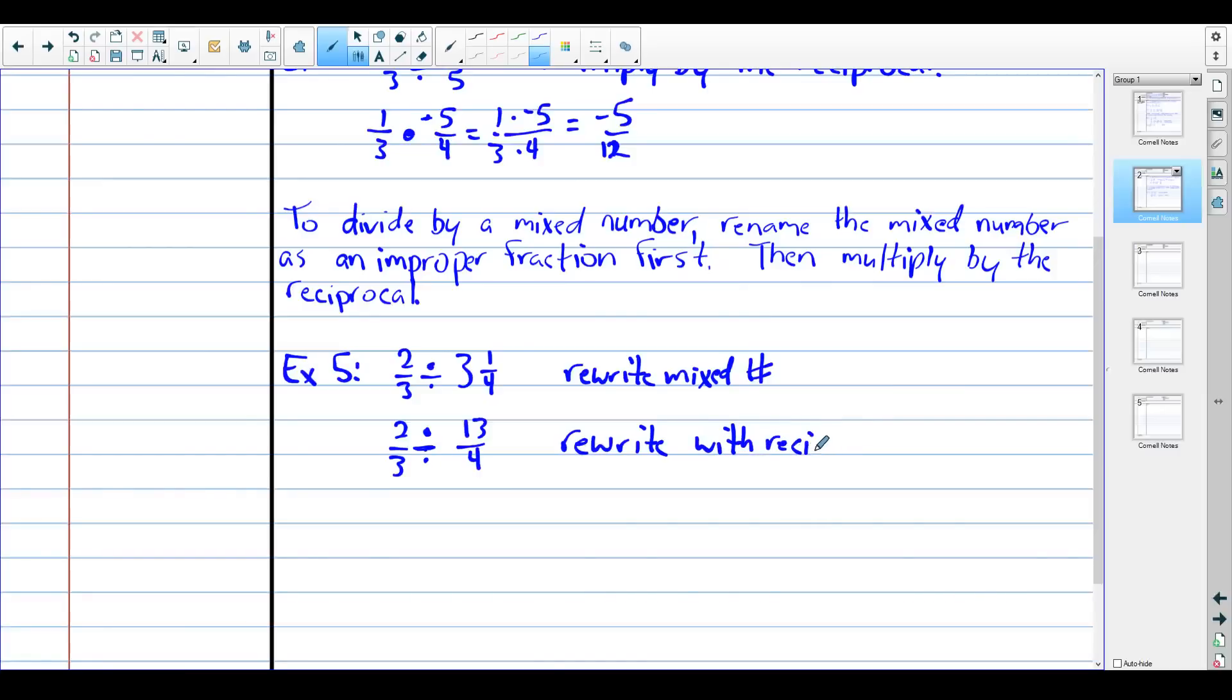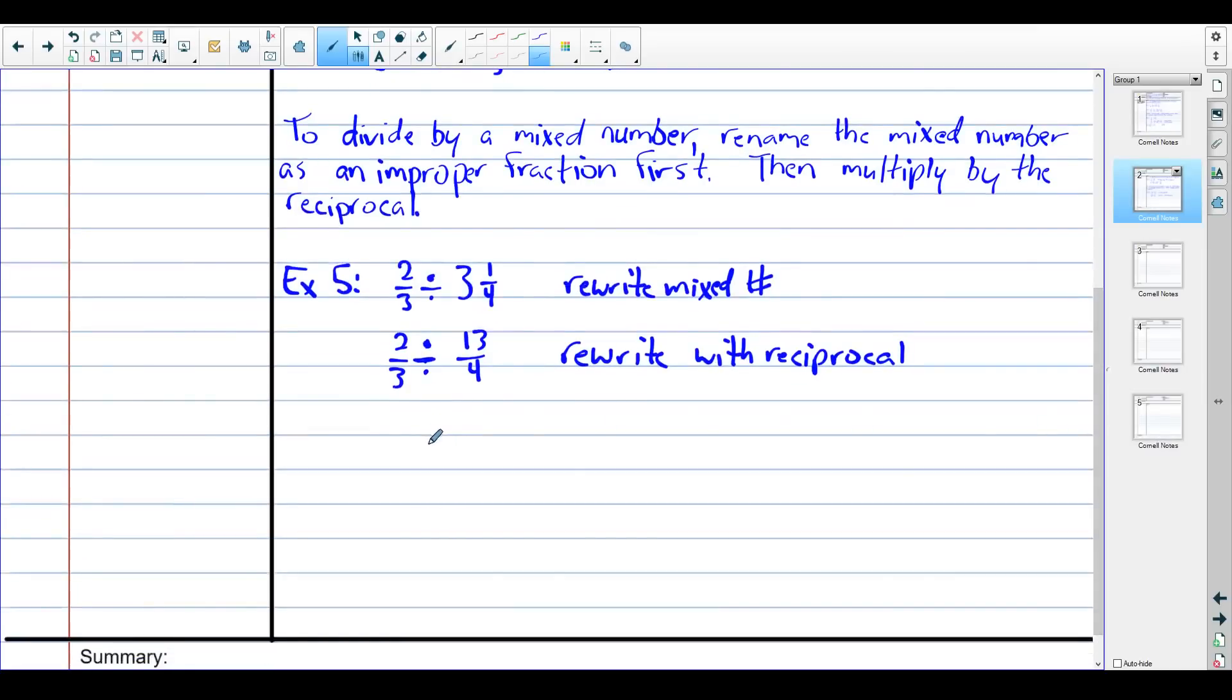This becomes two thirds times four over thirteen. We just take the second fraction, flip it over, change the division to times. Then we can do math. This is equal to whatever two times four is divided by whatever three times thirteen is. And this part's not that bad. Two times four is eight, three times thirteen is thirty nine. And you get your answer. So two thirds divided by three and a quarter is equal to eight thirty ninths. And that's it.